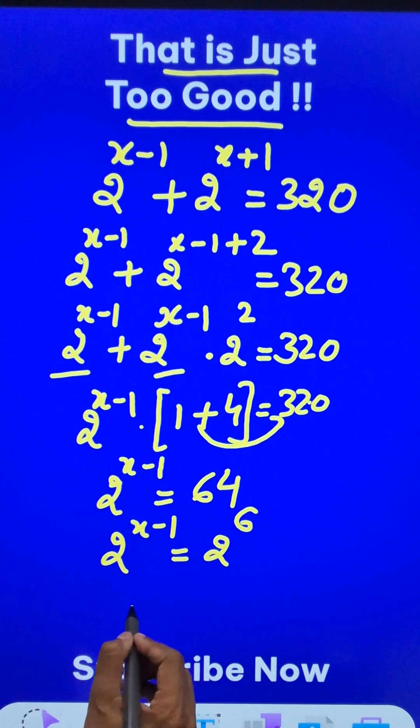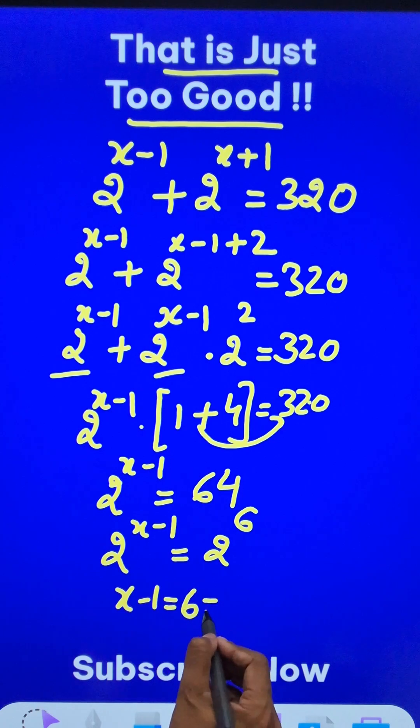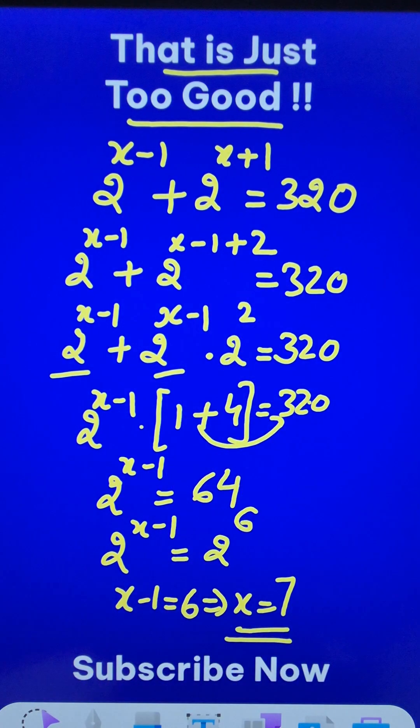2 raised to power 6, and so x minus 1 equal to 6 gives x equal to 7 as the answer for this particular question.